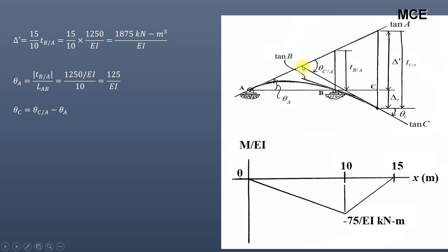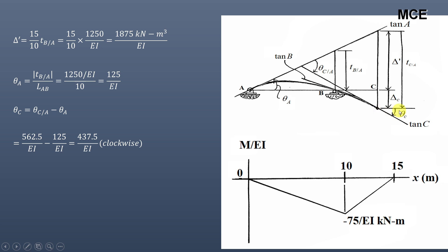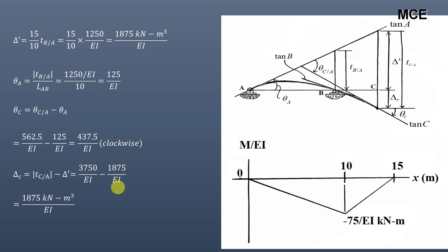Theta_c equals theta_ca minus theta_a: theta_c = 562.5/EI − 125/EI = 437.5/EI, acting in the clockwise direction as shown in the figure. The deflection at C, delta_c, equals t_ca minus delta_dash: delta_c = 3750/EI − 1875/EI = 1875/EI.